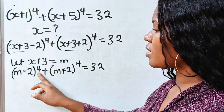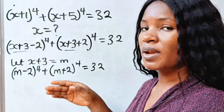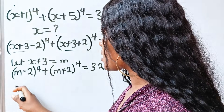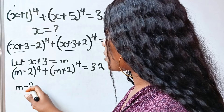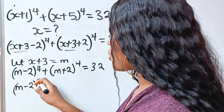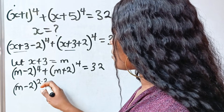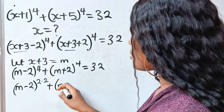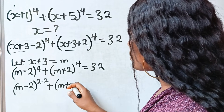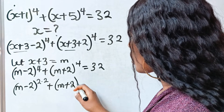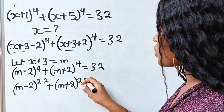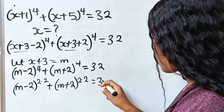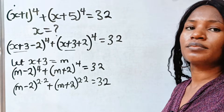Now, 4 is 2 multiplied by 2. So we can write this as (m minus 2) raised to the power of 2 multiplied by 2, plus (m plus 2) raised to the power of 2 multiplied by 2, is equal to 32.